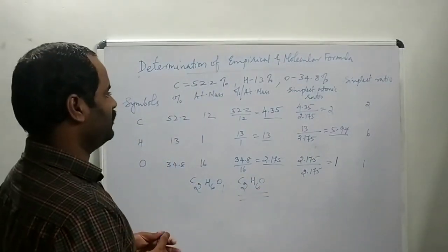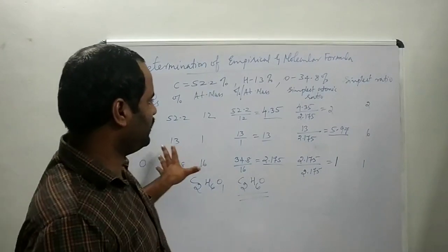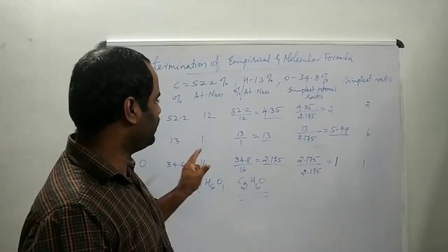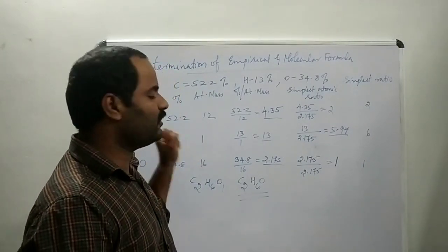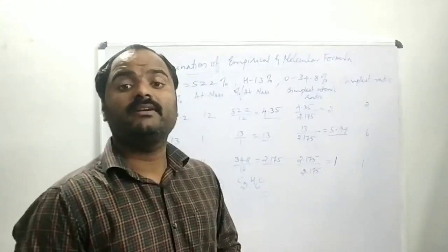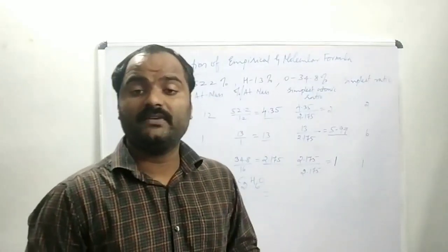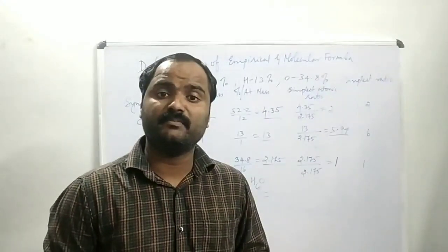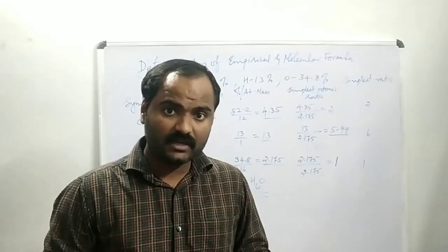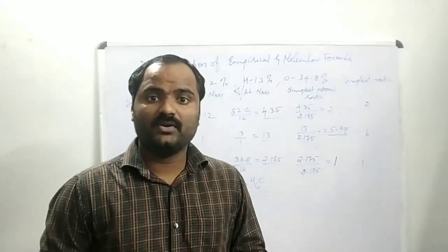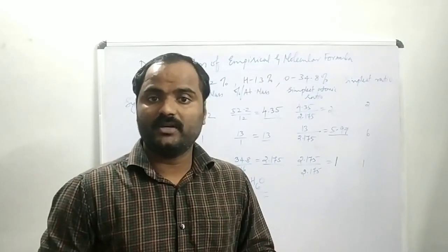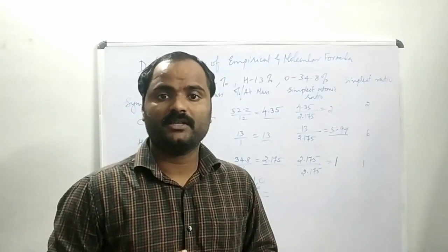The empirical formula of the compound is C₂H₆O. This is the way to calculate the empirical formula of a compound. Today we have discussed the empirical formula and the molecular formula. That is all about today's session, thank you.